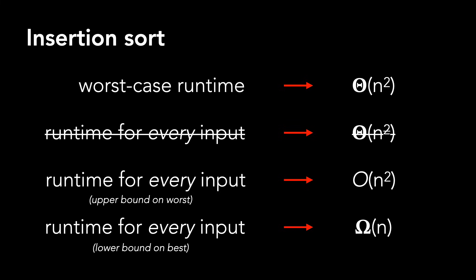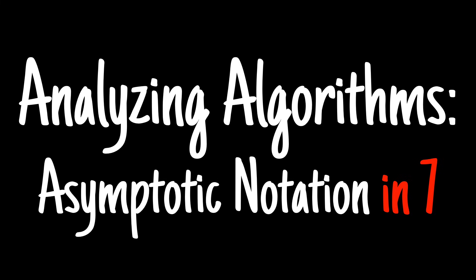These examples, of course, are when n is significantly large. Because we're most interested in worst case, big O is often chosen because it's an upper bound. Thank you for watching. I hope this video helps you on your computer science journey.